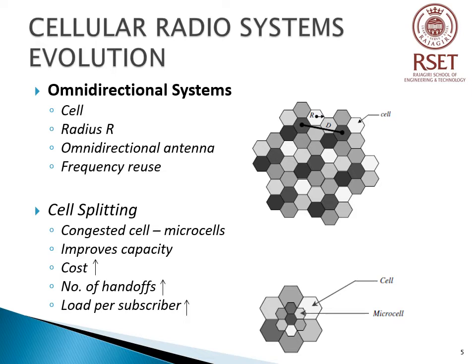Maintaining capacity has always been a challenge as the number of services and subscribers increased. To justify the need for smart antenna systems in current cellular system structure, a brief history on the evolution of cellular radio systems is presented. In omnidirectional systems, each hexagonal area represents a small geographical area named a cell, with maximum radius R. At the center of each cell resides a base station equipped with an omnidirectional antenna. Base stations in adjacent cells are assigned different frequency bands, and the same band of frequencies may be reused in cells separated by sufficient distance to keep interference below threshold. This design process is referred to as frequency reuse.